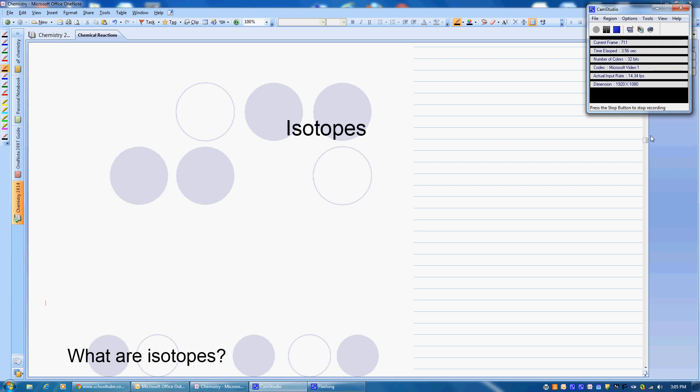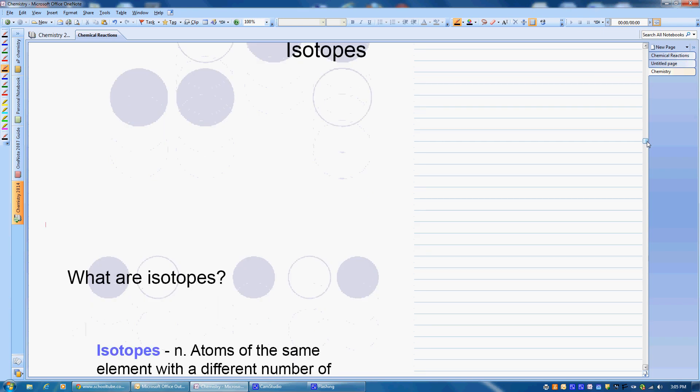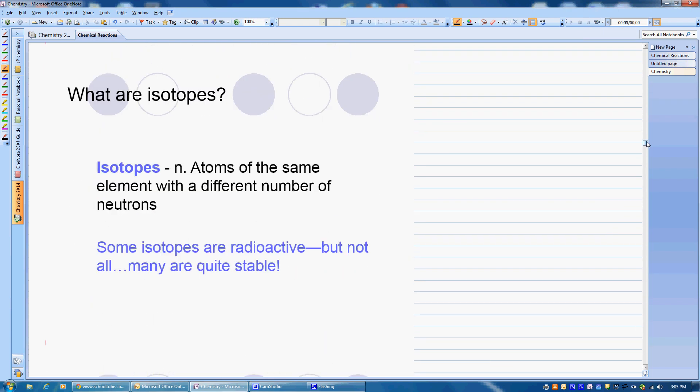Isotopes. What are isotopes? Well, here's our definition. Atoms of the same element with a different number of neutrons. So if we talk about that, we know that if something is the same element, it has to have the same number of protons.